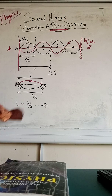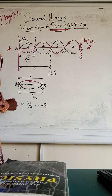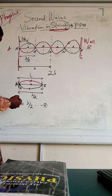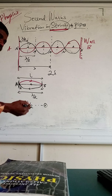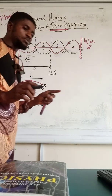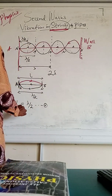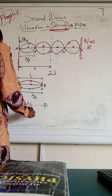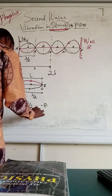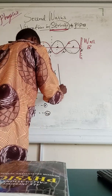Take note — we are looking at vibration in string instruments. Recall from your general wave equation that V equals lambda F. Call this your equation star star.